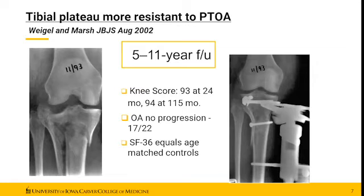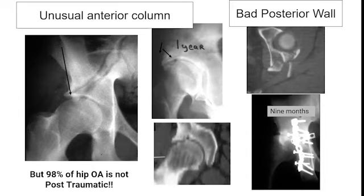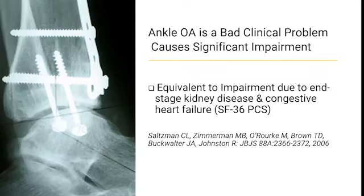Here is just an example of the knee — a bad tibial plateau fracture, the surgical treatment with external fixation, and this idea that the knee articular cartilage after injury is relatively resistant to post-traumatic arthritis. The more congruent hip joint is prone to post-traumatic arthritis. I've shown two examples: an unusual anterior column fracture with cysts on CT at one year, and a failed joint within a year after a bad posterior wall fracture — but these injuries are uncommon, and 90% of hip OA is not post-traumatic.